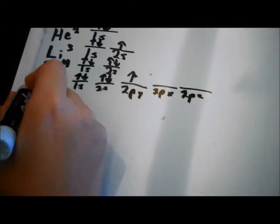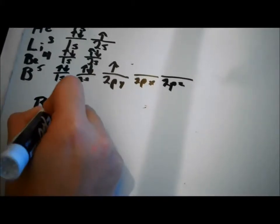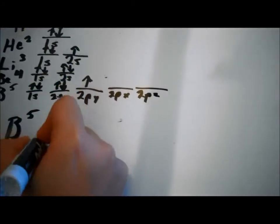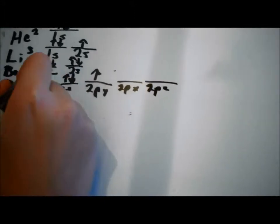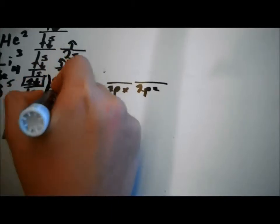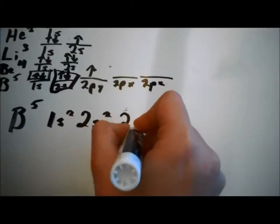And, to abbreviate it, say I wanted to abbreviate boron. So, I would write B5. And then it's 1s2 because you have 2 electrons. 2s2, 2 electrons. And 2p1.